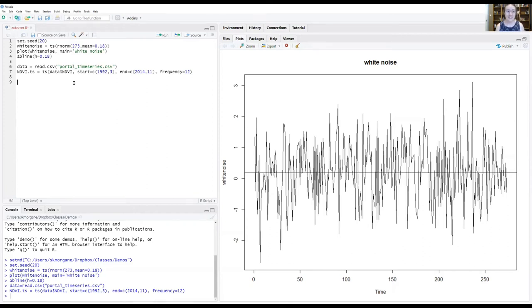All right, hopefully we've all loaded our data and turned NDVI into a time-series object. And now why don't we all plot our NDVI time-series object. Let's label equal here, my label equal greenness, name equal NDVI. Run that.